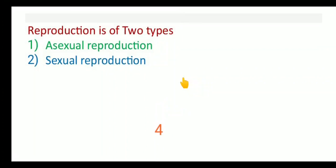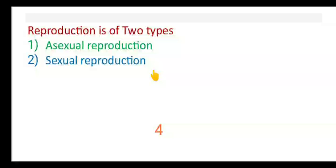Now dear students, we see that reproduction is of two types: the very first one is asexual reproduction and the next one is sexual reproduction. Asexual reproduction yaani ghair jinsi tauleed, aur sexual reproduction means jinsi tauleed. We will study what number of organisms reproduce asexually and which ones reproduce sexually.